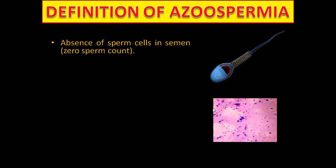Definition of azoospermia: it is the absence of sperm cells in semen — zero sperm count, no sperm.